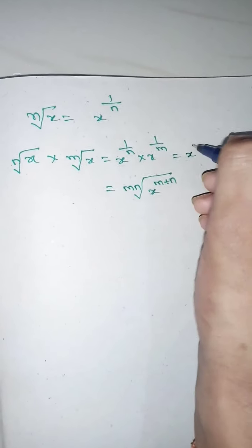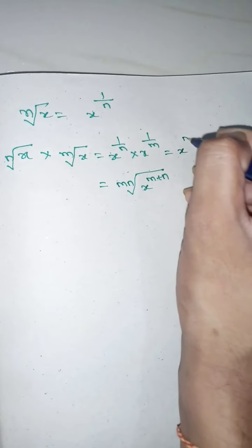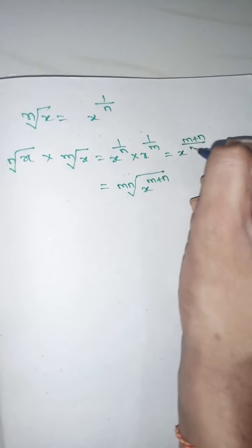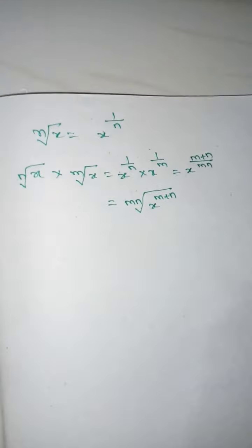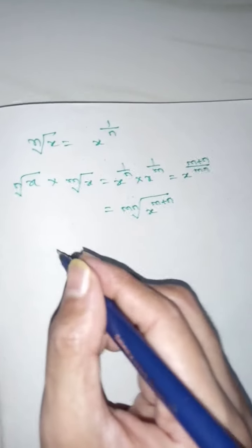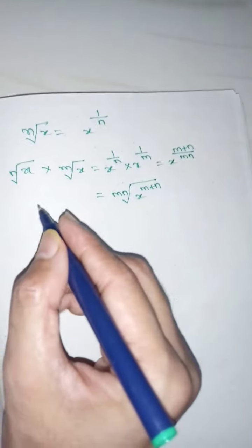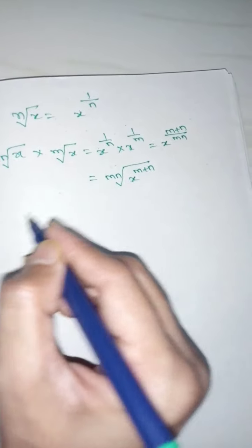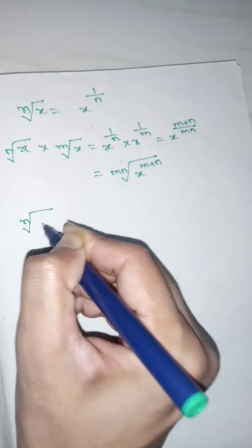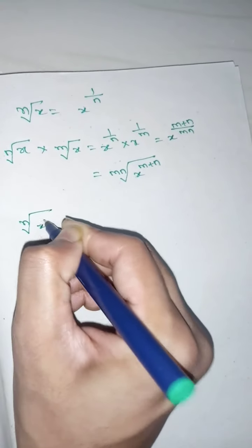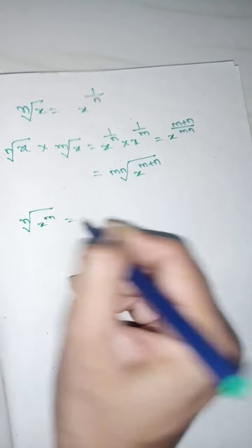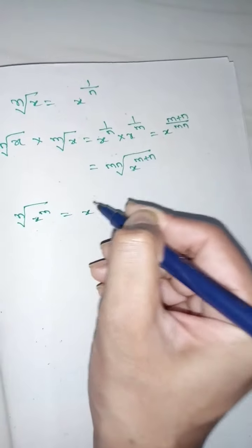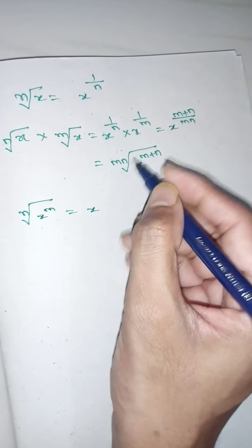That is equals to x to the power of m plus n by n. Next, the nth root of x to the power of m is equals to x to the power of m by n.